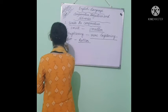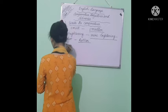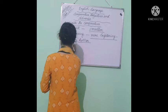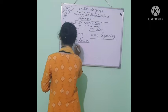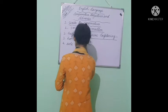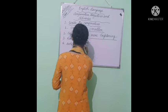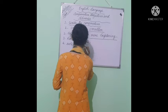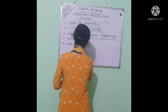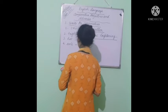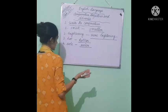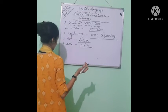Number four: the word is safe. Safe ends with 'e', so like nice becoming nicer, safe becomes safer — S-A-F-E-R. Safer.